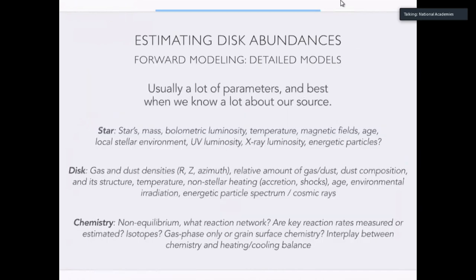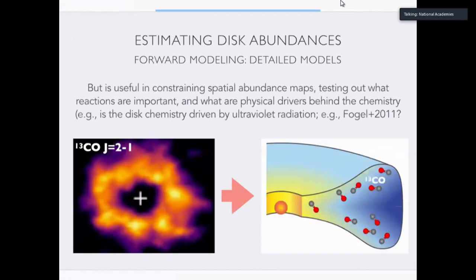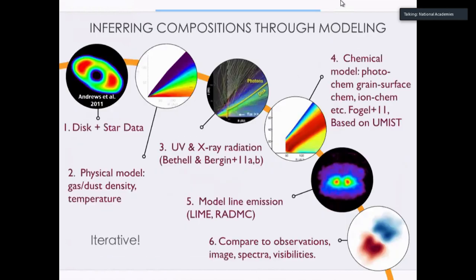The third option is you can just go kitchen sink and do full forward models, including chemistry. This usually requires lots and lots of parameters. And it's only really best applied when you know a lot about your source. The star, the star's properties, its luminosity, the disk, the gas and dust densities, and the chemistry. What kind of reaction network do you use? Are the rates in your reaction network well measured or not for the relevant reactions? Do you include gas phase or do you include grain surface chemistry, et cetera? And so there's a lot of different options. But this tends to actually be a pretty good way of getting full 2D dimensional maps of abundances in disks, especially when you know your source very, very well. And the most important thing is that by having a full chemical model, you can actually say something about why you have 13 CO in the surface, what reactions are actually driving the chemistry in the disk. Whereas a parametric model just says where it's happening.